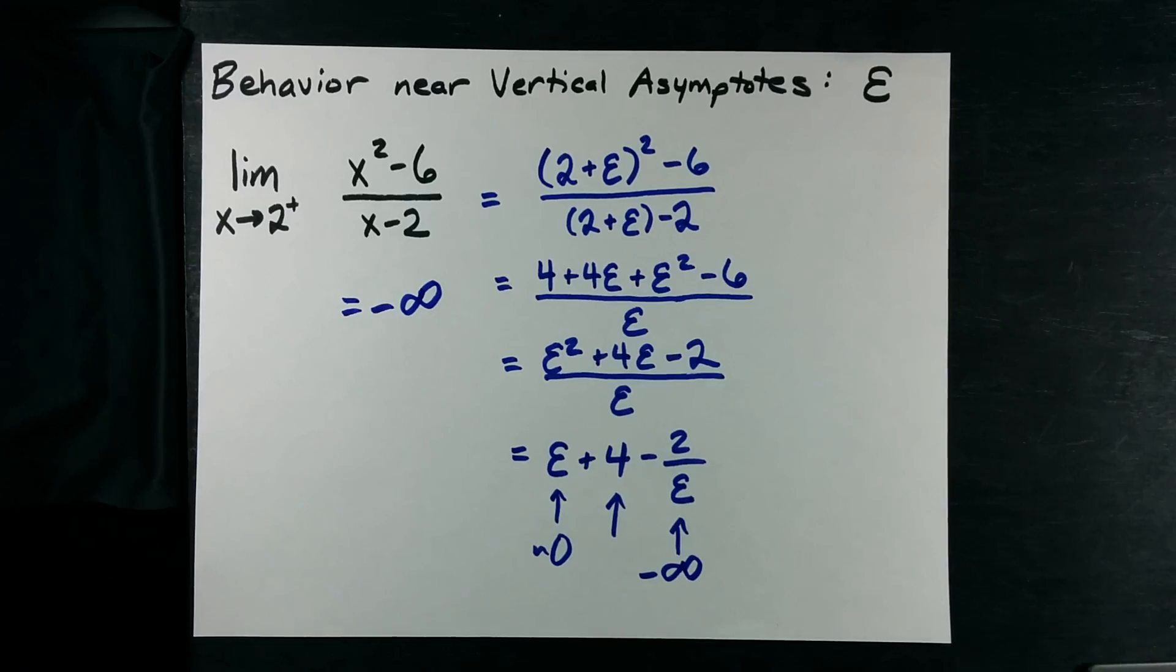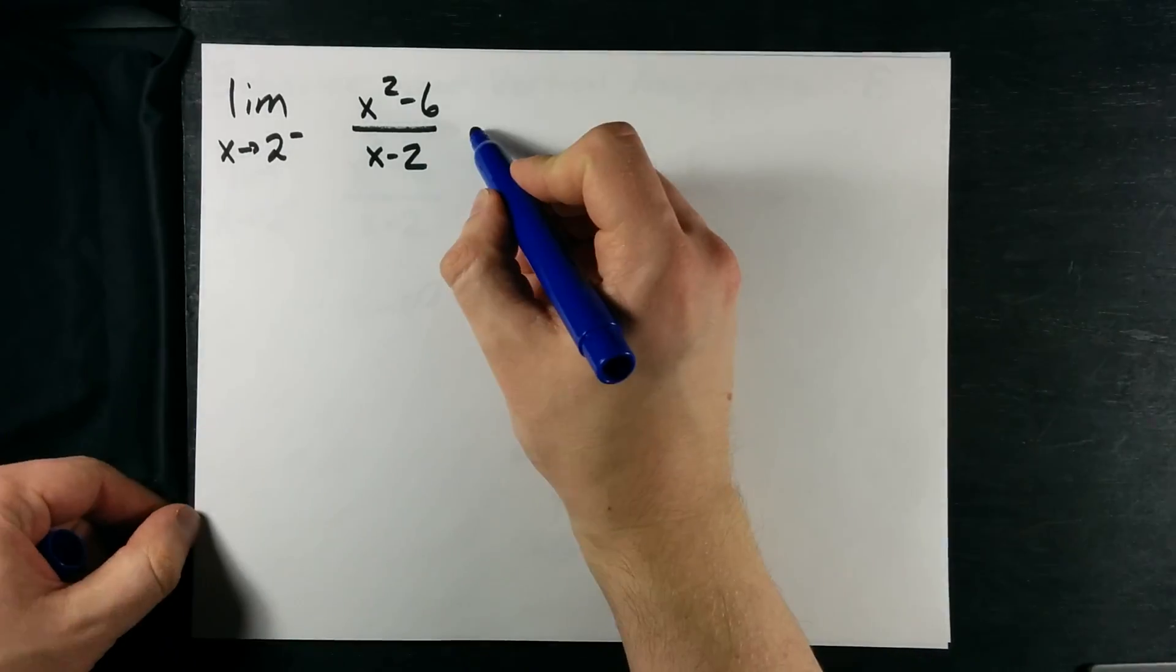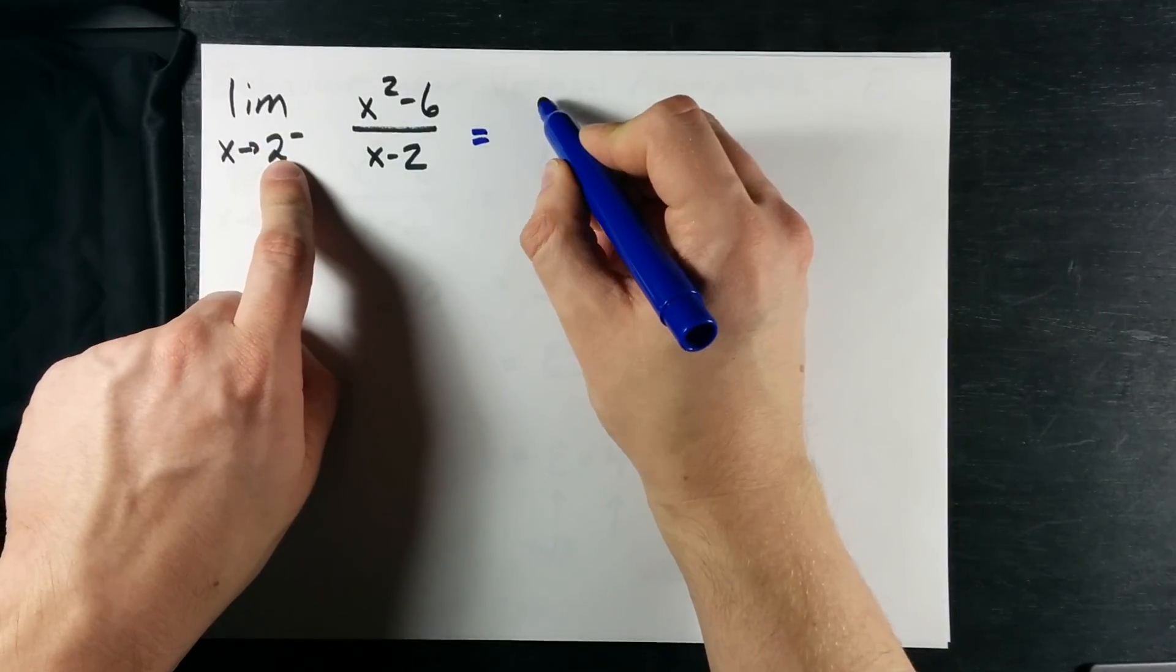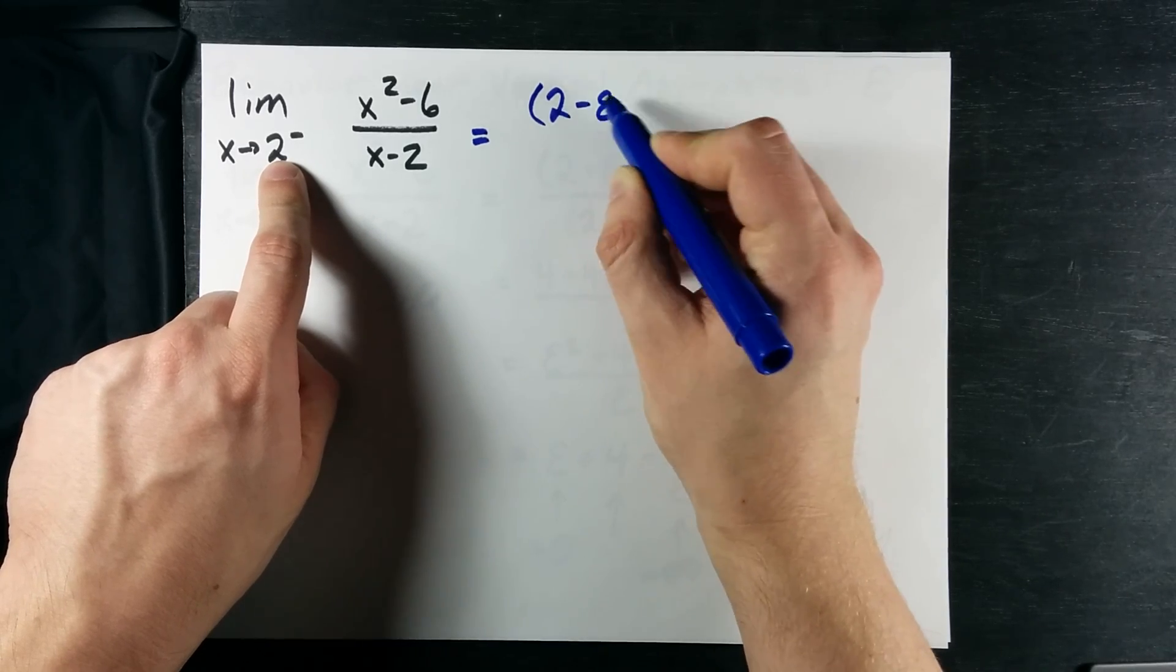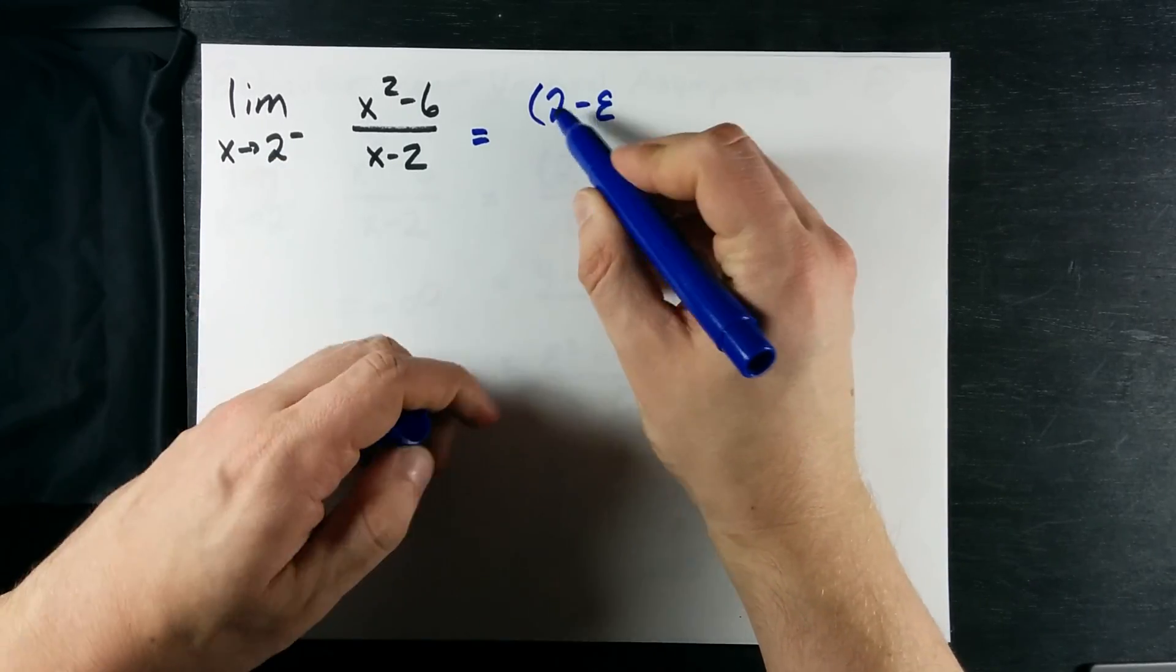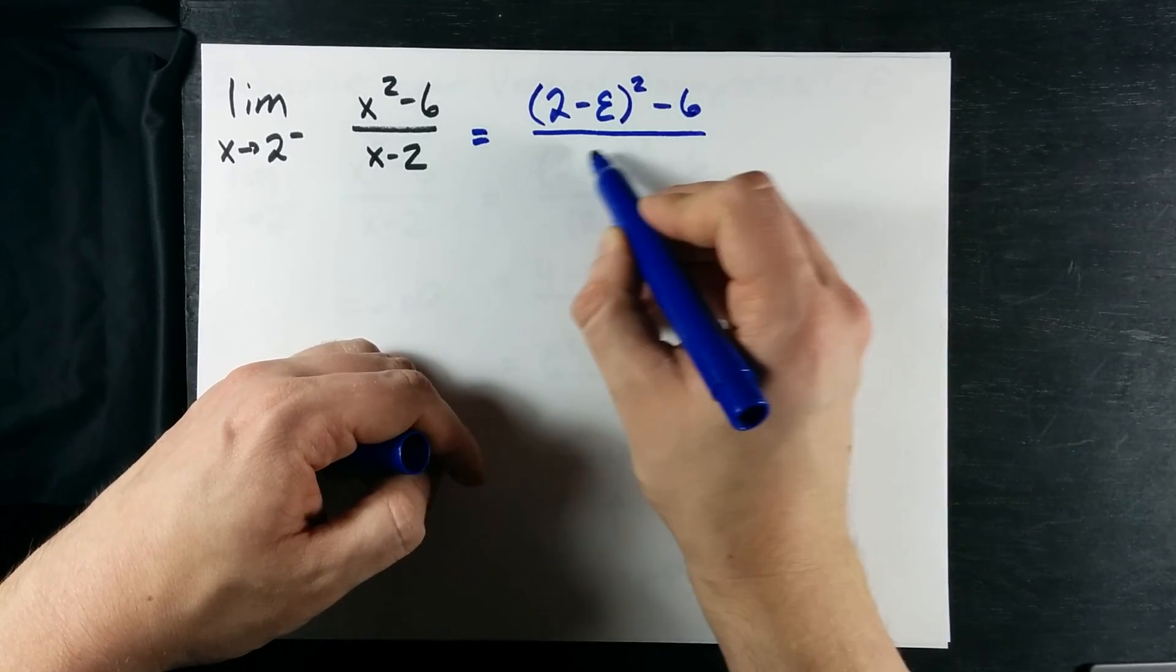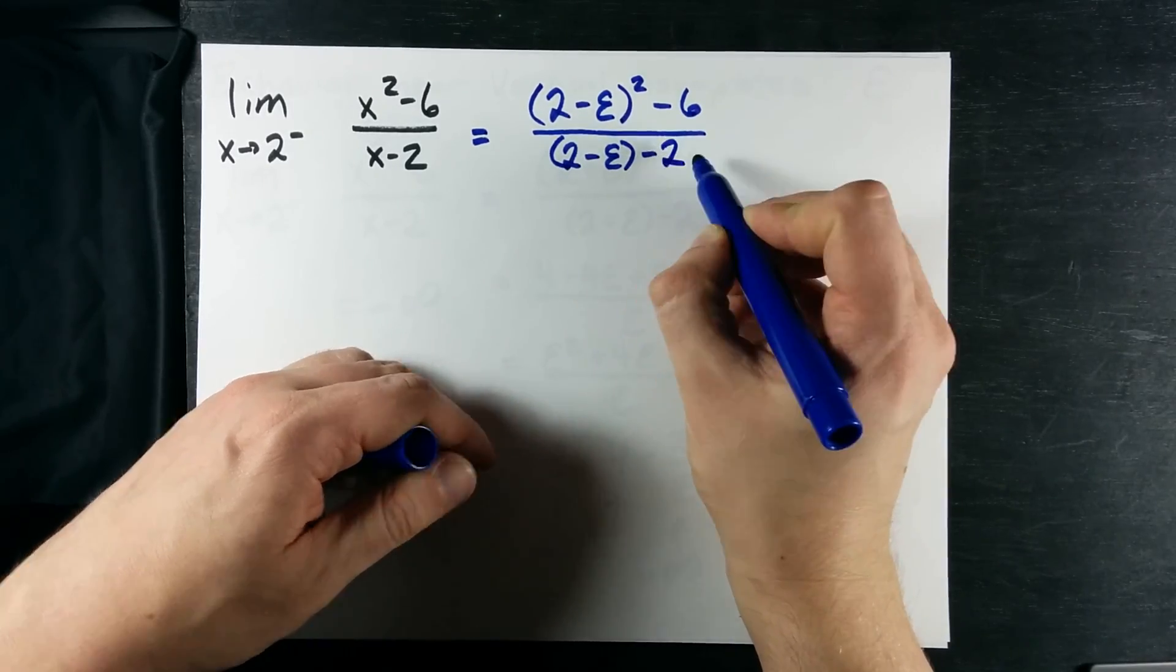Let me show you that this works from the left-hand side as well. Here, we want to approach 2 from the opposite side on the graph. We end up with 2 minus some number epsilon, 0.001. That makes this 1.99999, something like that.